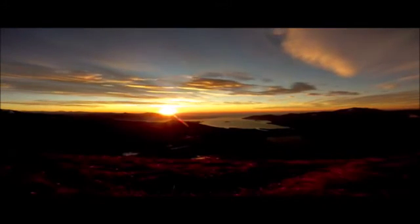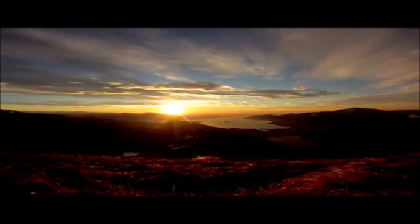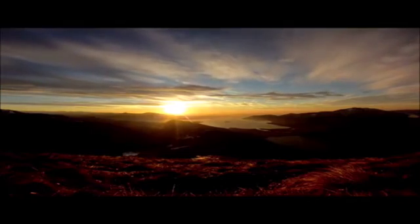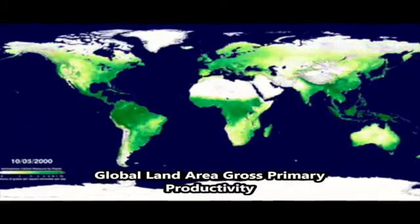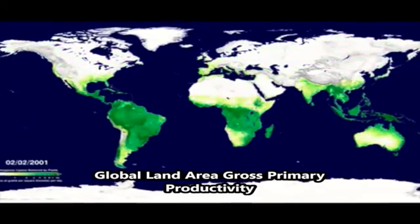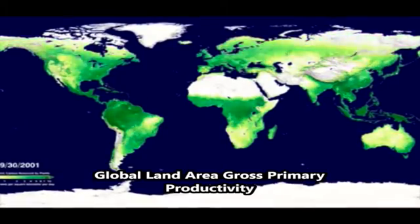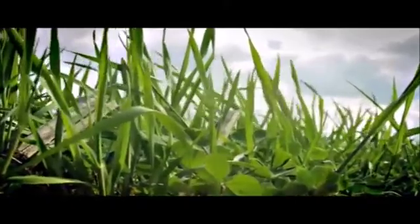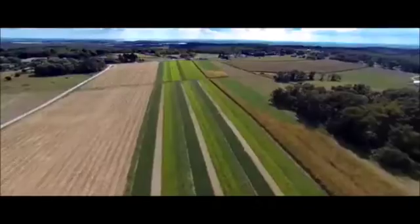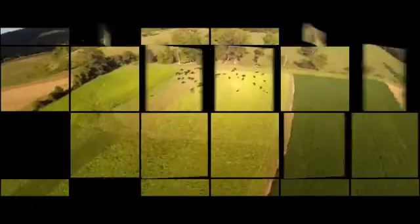The flow of energy through an ecosystem starts with the harnessing of sunlight by green plants through a process referred to as primary production. The total amount of energy fixed by plants is gross primary production. The amount of energy remaining after plants have met their respiratory needs is net primary production in the form of plant biomass. The rate of primary production is net primary productivity, measured in units of weight per unit area per unit time.